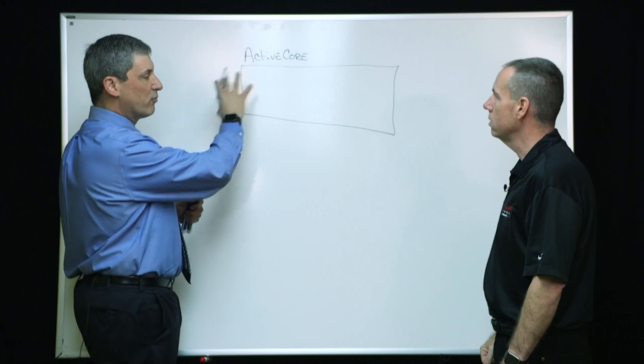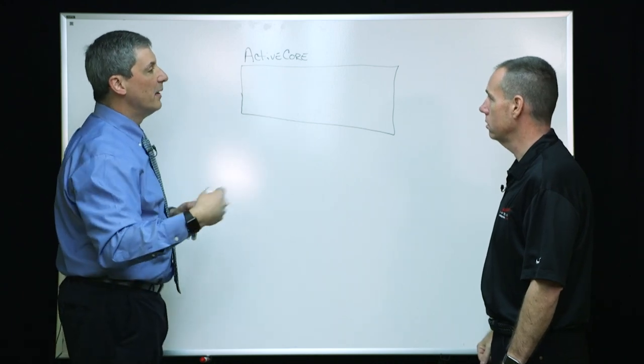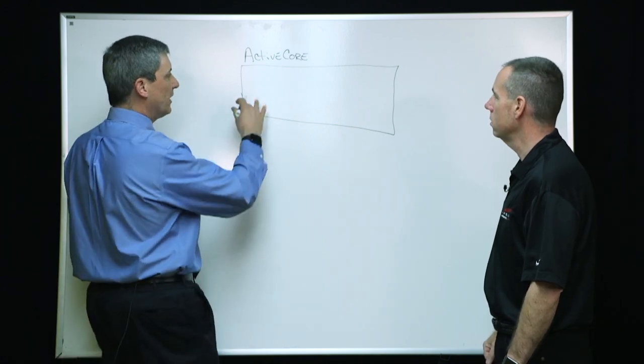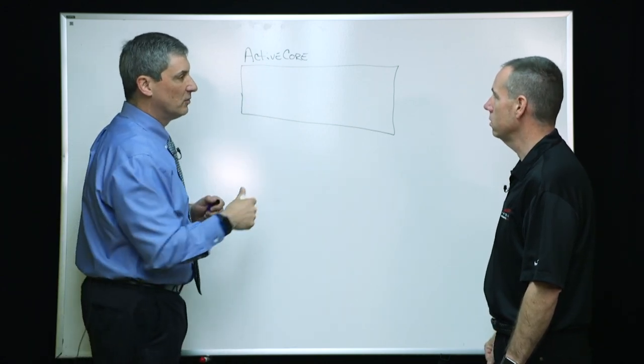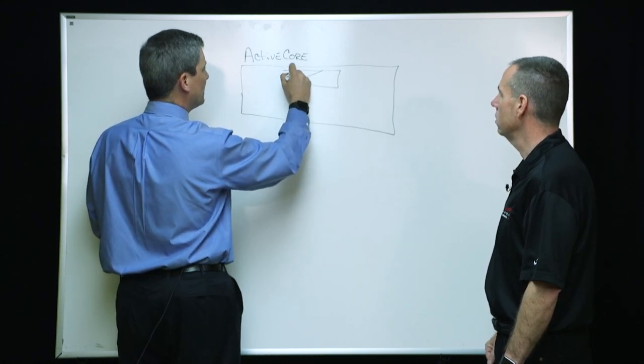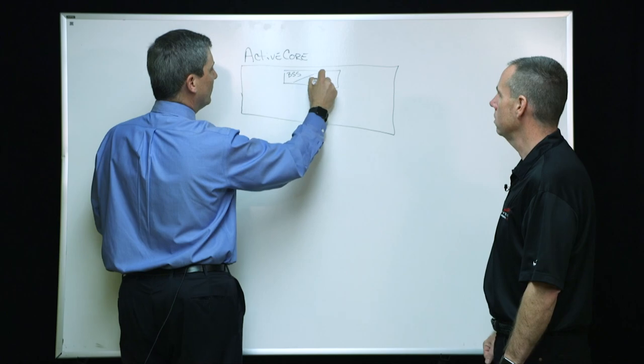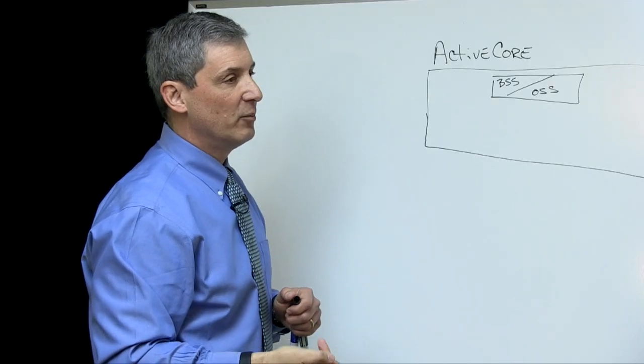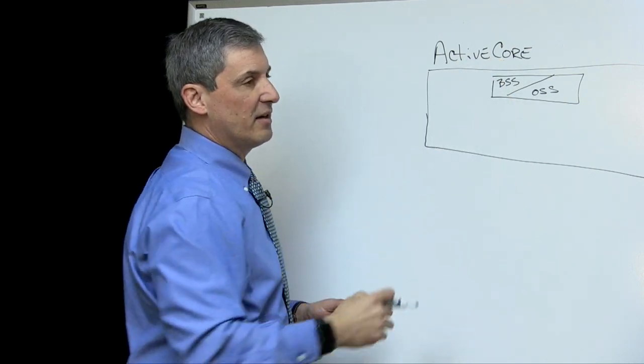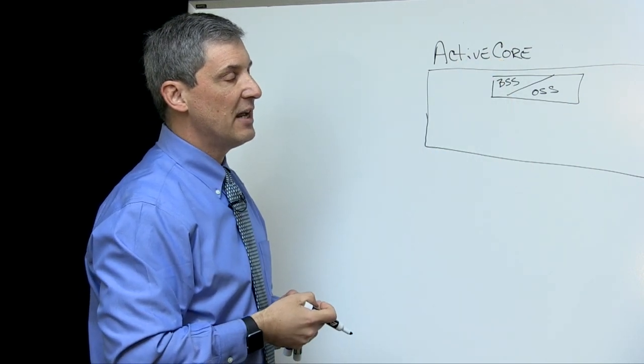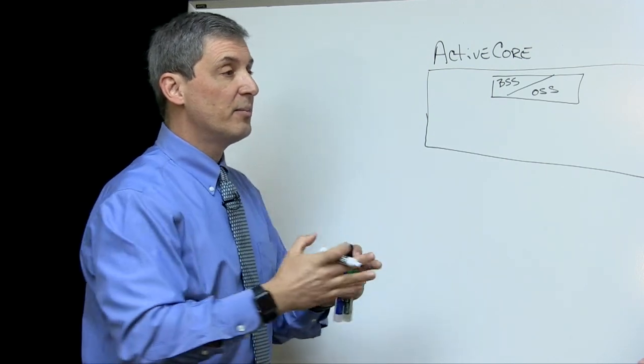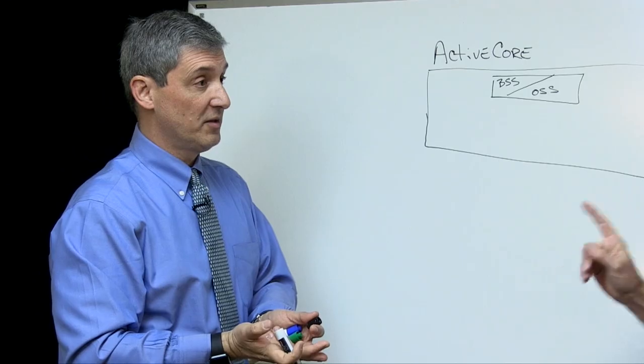So I think the easiest way is to just go block diagrams here. I'm going to draw what we announced last September. It's a platform that we called ActiveCore. And as I break this out, not all, but many, many, many products and services will come through this platform. What's the important part of an ActiveCore infrastructure? The first instance is our BSS OSS platform. We happen to be partnering with Amdocs in this space.